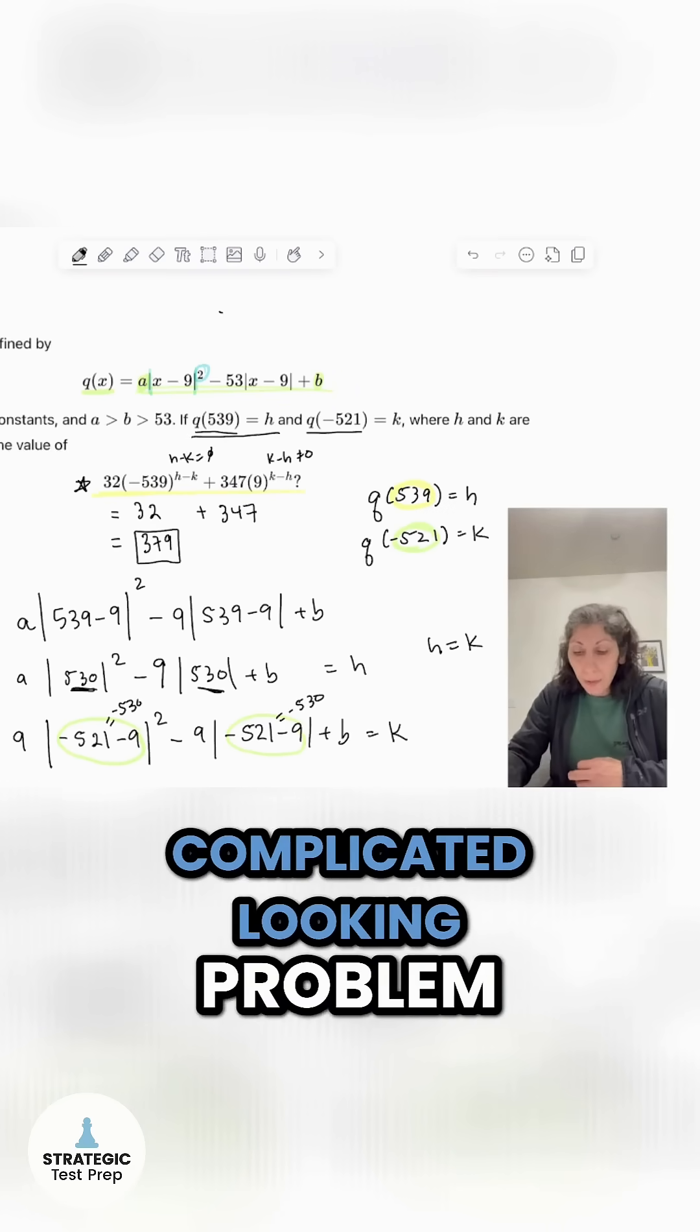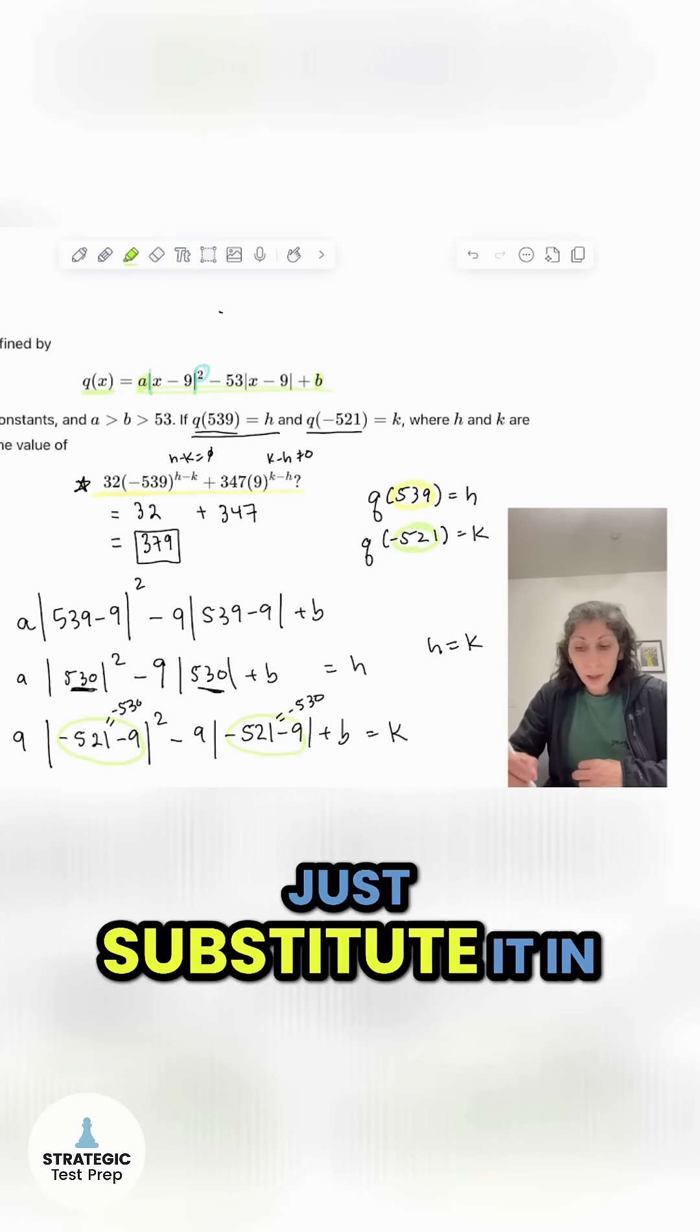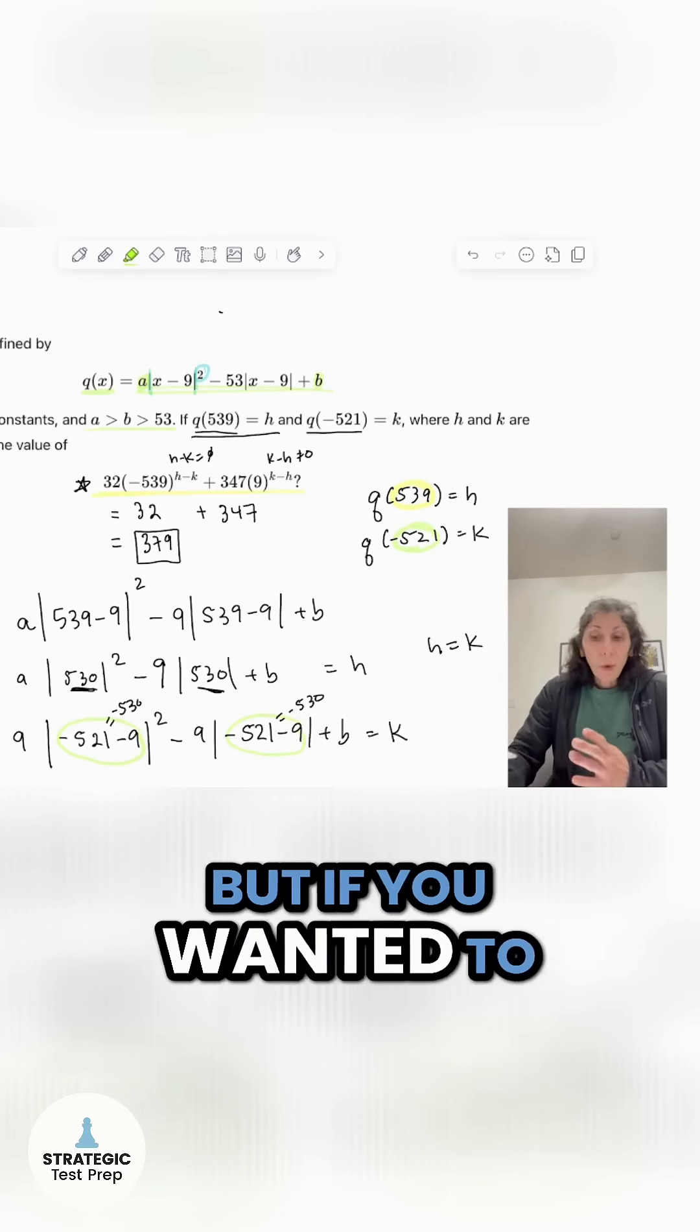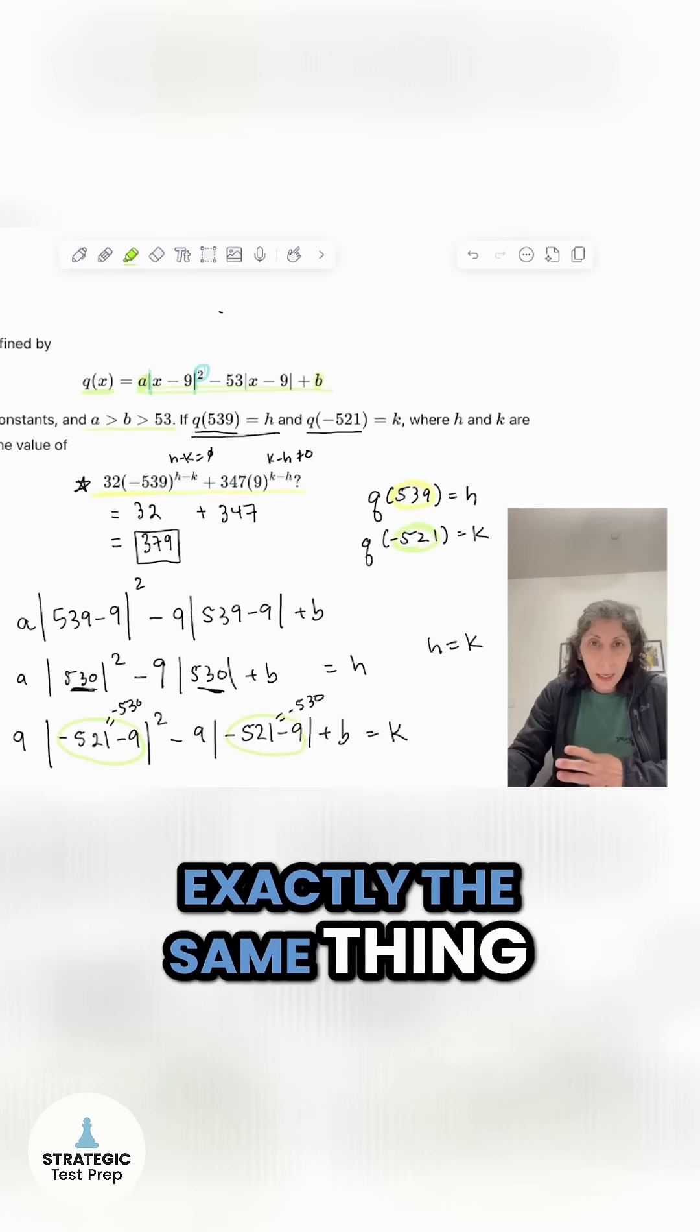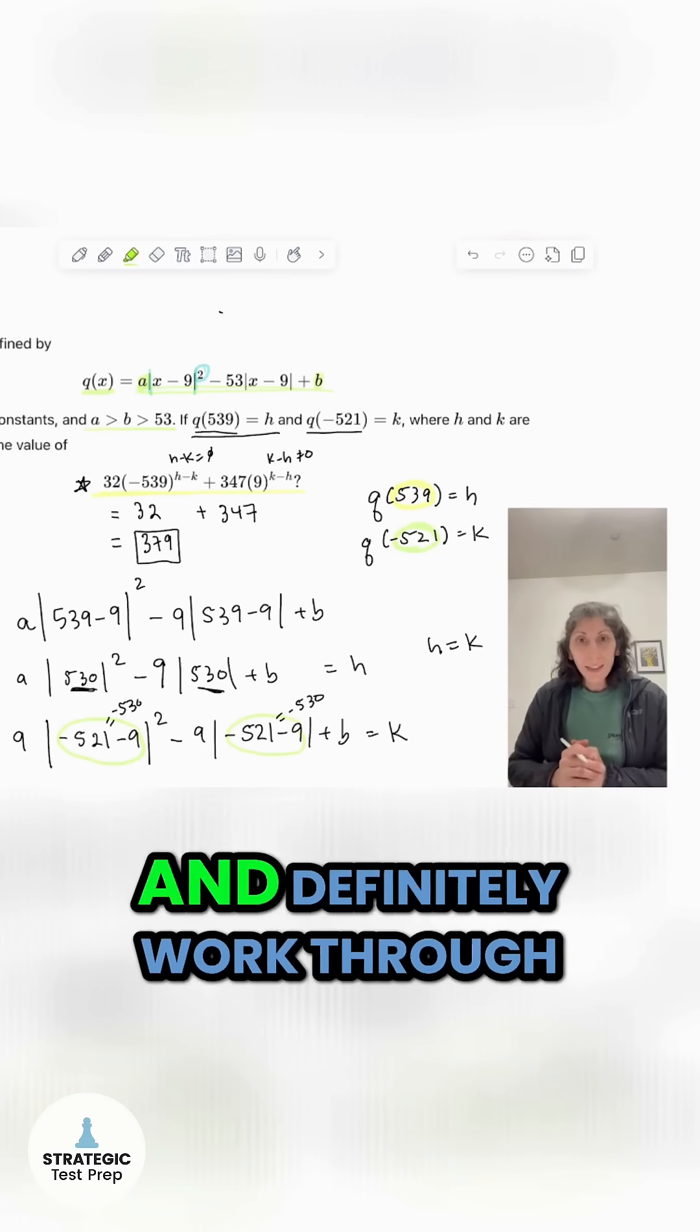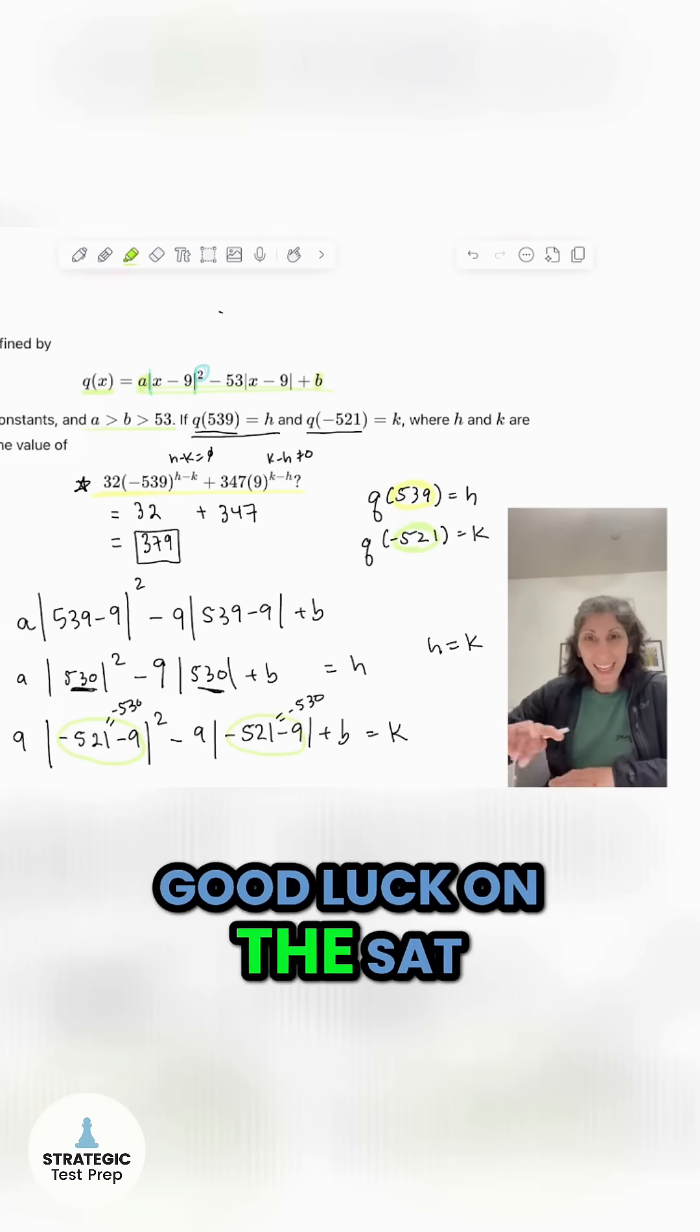So this is a pretty tricky, complicated looking problem. Really, we were able to use the information provided in the problem and just substitute it in for X and be able to solve it. I still see that there's these A's, A and B. We ignored it, but if you wanted to, you can still pick numbers and plug them in and then do exactly the same thing. But you don't need to for this problem. So you kind of have two options to go at with this. Hopefully this was helpful and definitely work through the rest of the questions of this workbook. Thanks so much. Good luck on the SAT.